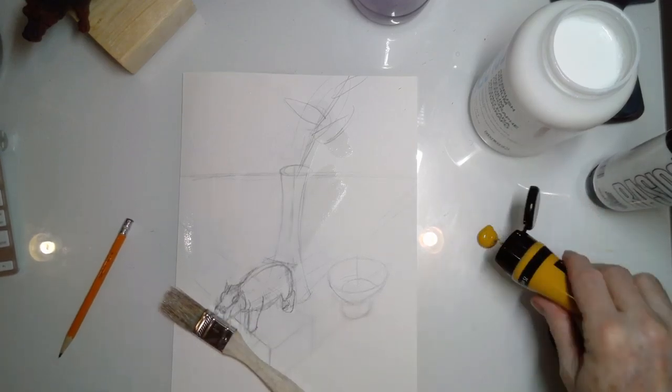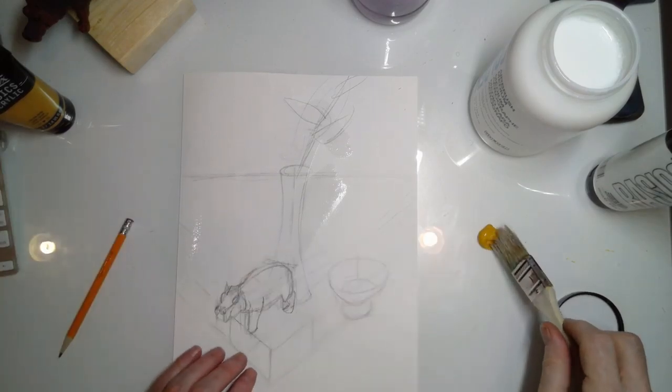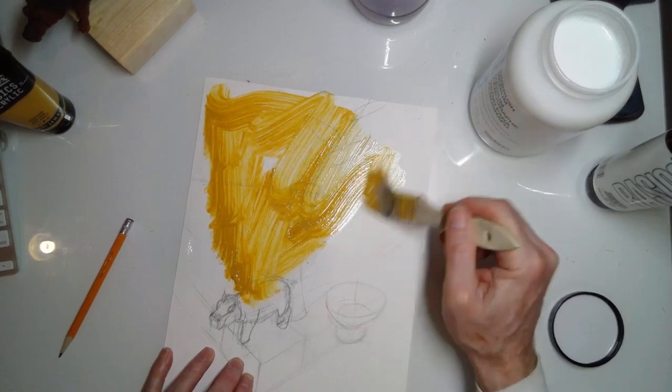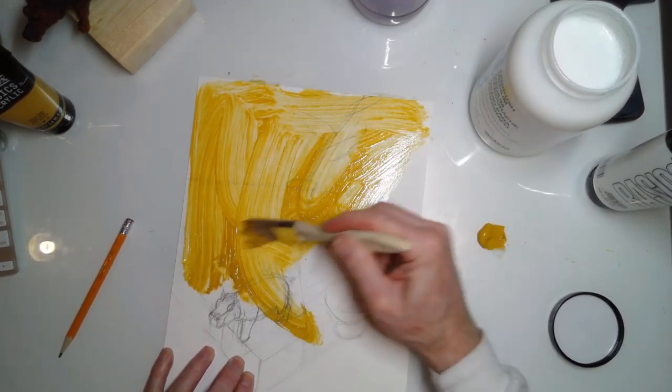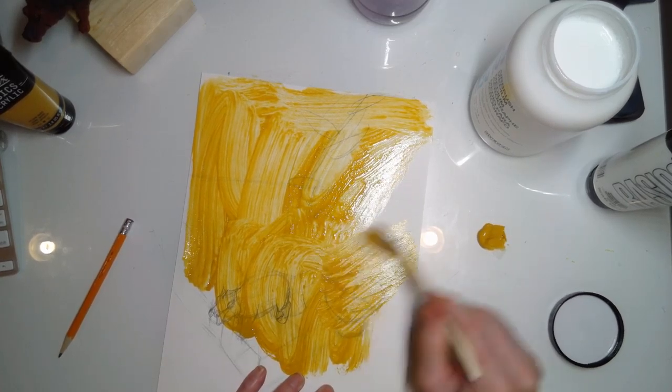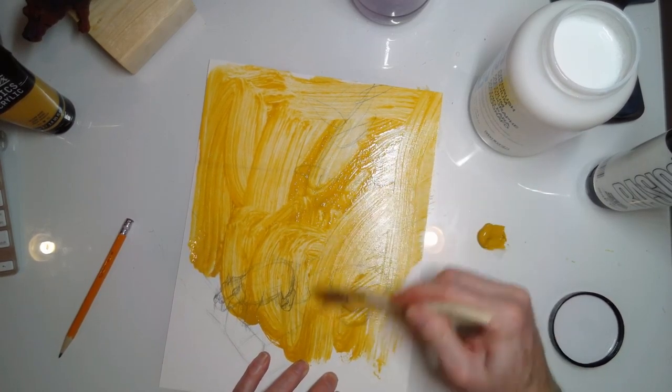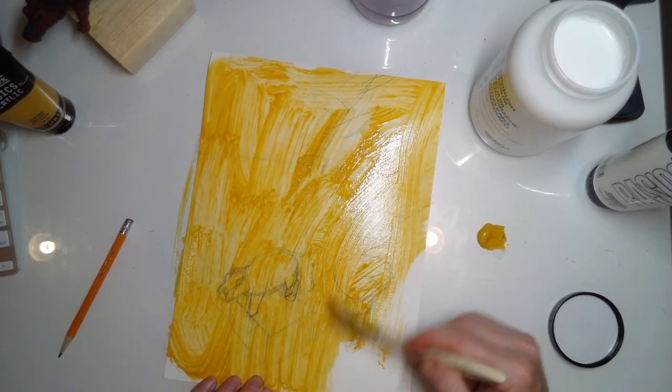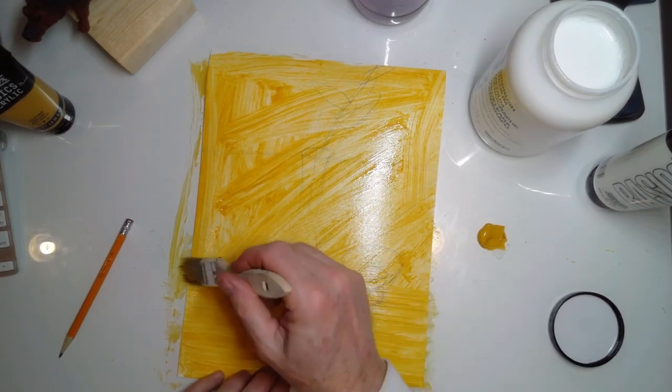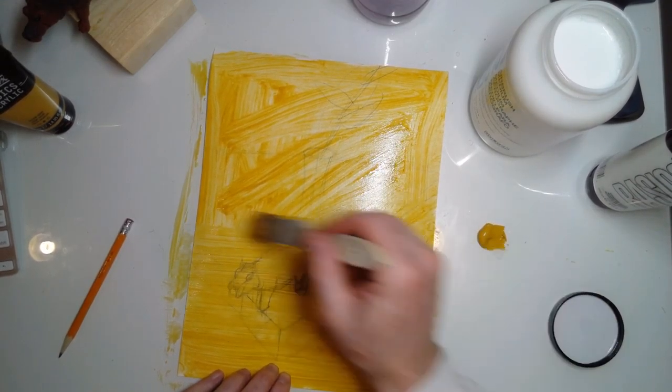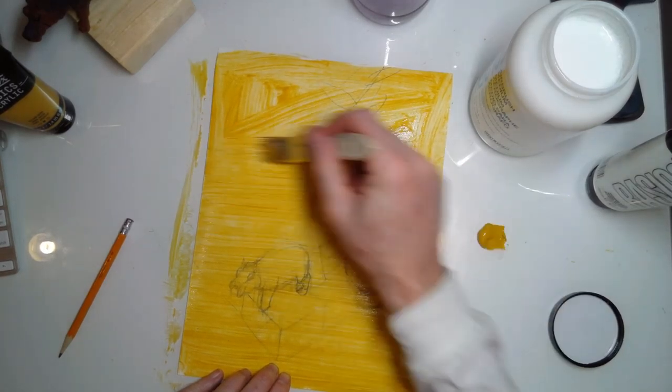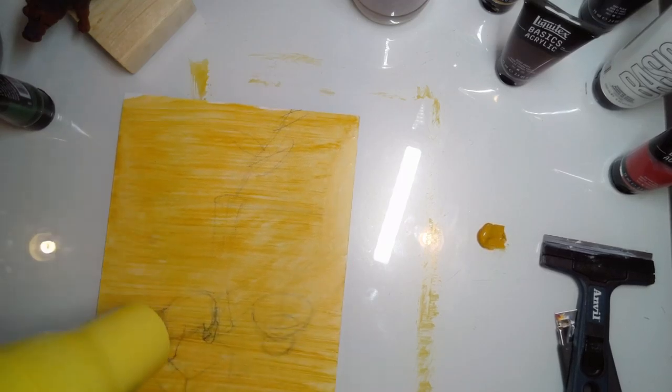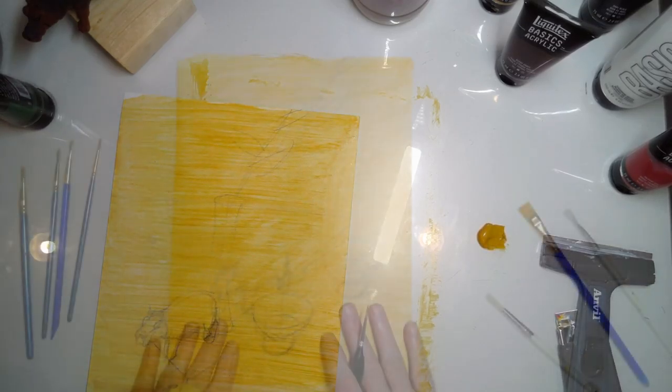I'm going to use this yellow ochre to prime my canvas. I'm going to mix it in and use this as the basis of my painting. I'm just going to cover the whole canvas with it and then let it dry. Then I'm going to go in and begin to redefine the objects, redraw them, and then lay in the colors.